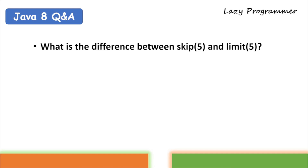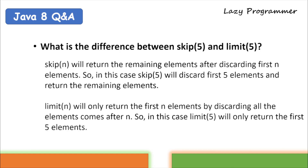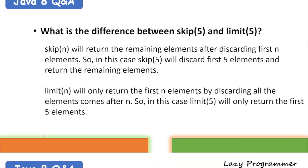You can also expect questions from stream API methods. What is the difference between skip(5) and limit(5)? Both are intermediate methods in stream API. skip(n) discards the first n elements and returns the remaining elements — so skip(5) returns elements starting from the sixth. limit(n) returns only the first n elements, discarding everything after — so limit(5) returns only the first five elements. Skip cuts from the beginning; limit takes only a specific chunk from the start of the stream.